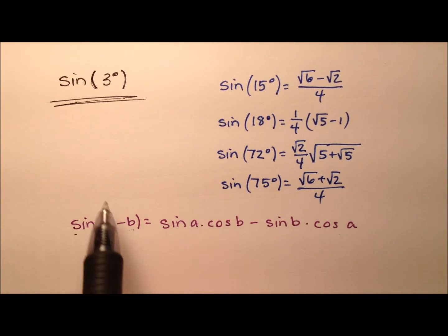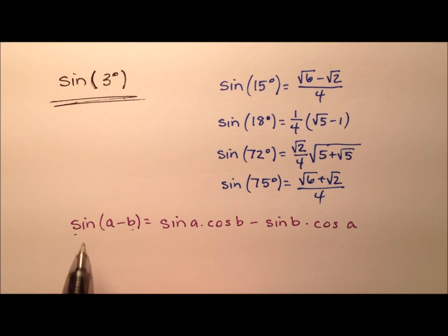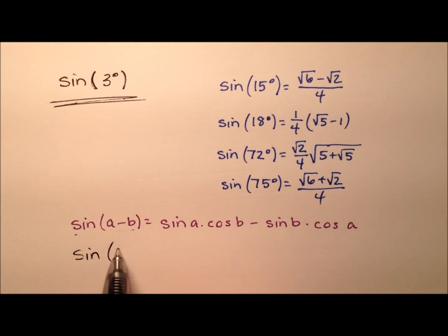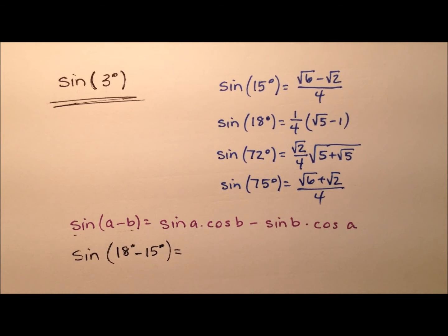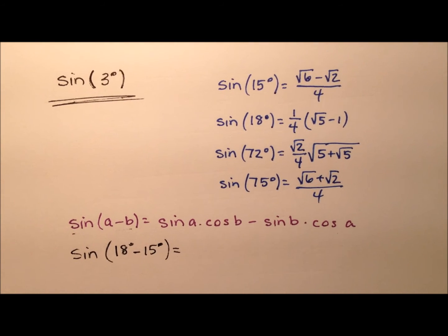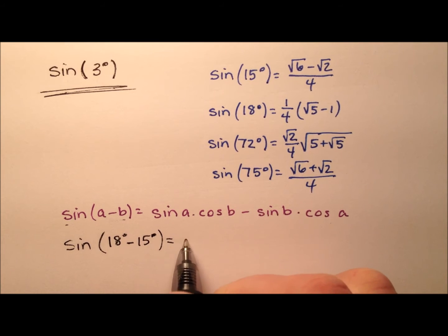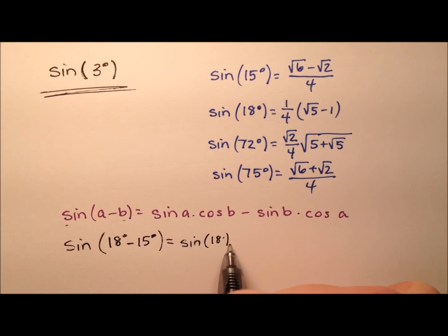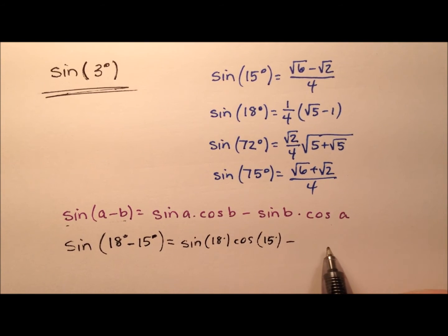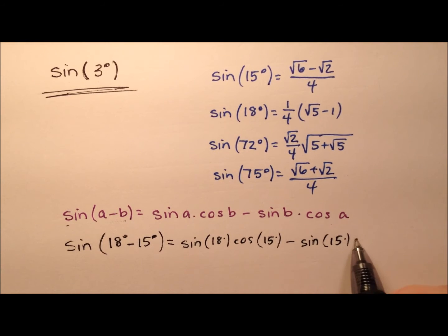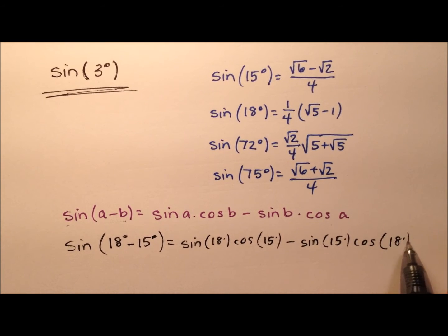In order to find the sine of 3 degrees, I'm going to use the sine of 18 minus 15 degrees — and 18 minus 15 is 3. So using our difference formula for sine, that's going to be the sine of 18 degrees times the cosine of 15 degrees, minus the sine of 15 degrees times the cosine of 18 degrees.